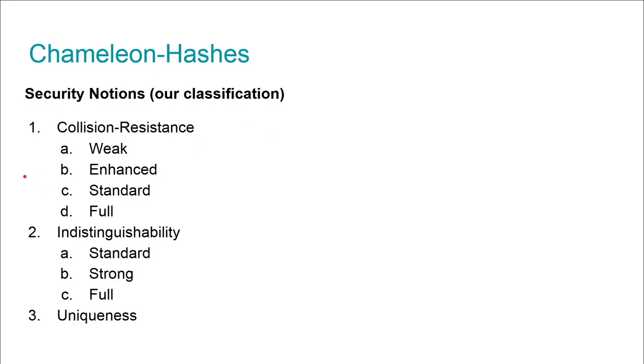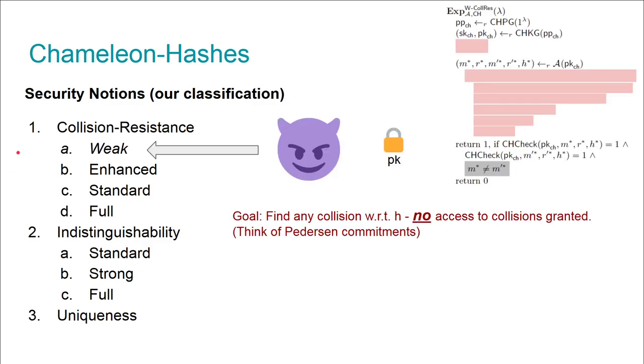Let's deep dive into chameleon hashes. We decided to group things into three distinct groups: collision resistance, which is an unforgeability notion; indistinguishability, which is a privacy notion; and finally uniqueness, which is also an unforgeability notion. Let's go to the first group.